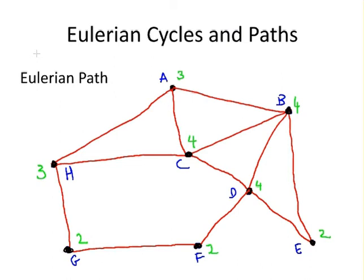So here we have another graph, and I've put in the degree of each vertex beside it in green, and we see that degree of A is three, and degree of H is also three. So these must be our starting points for our path.